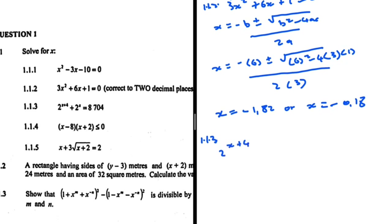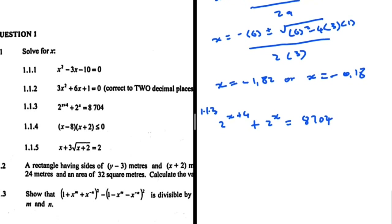Let's take a look at 1.1.3. We have 2 to the power of x plus 4, plus 2 to the power of x, equals 8704. We start by writing 2^(x+4) as 2^x multiplied by 2^4, plus 2^x, which all equals 8704.